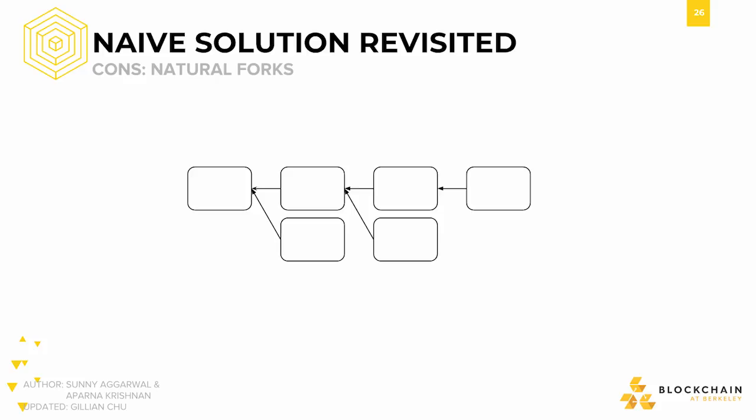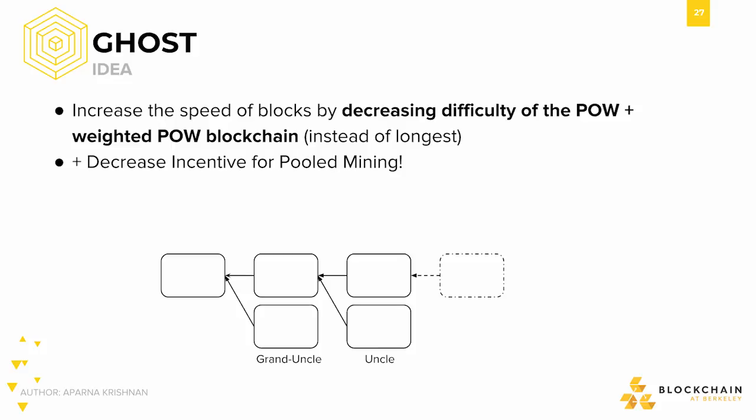So the problem now is: how can we account for the existence of an increased number of naturally occurring forks when we decrease the block creation time? How do we avoid wasting all of this work? Instead of just increasing the speed of blocks and doing nothing else, the observation is that we can increase the speed of blocks by specifically decreasing the difficulty of the proof-of-work problem, and also by considering the proof-of-work chain with the most weight, rather than simply the longest chain.